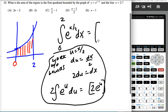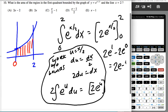So I get that this is 2e to the x over 2 evaluated from 0 to 2, which means I'm going to get 2e to the first minus 2e to the 0. So that is 2e minus 2.